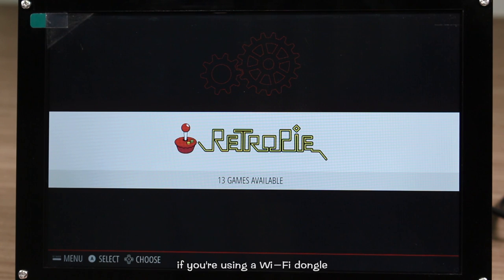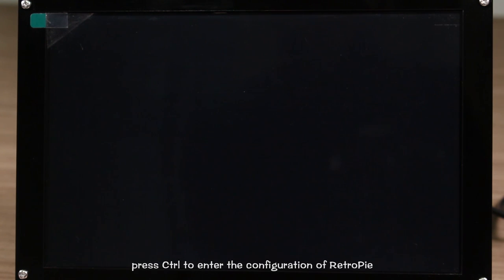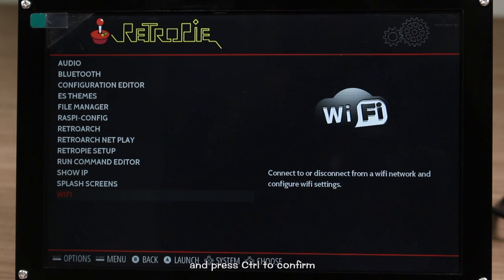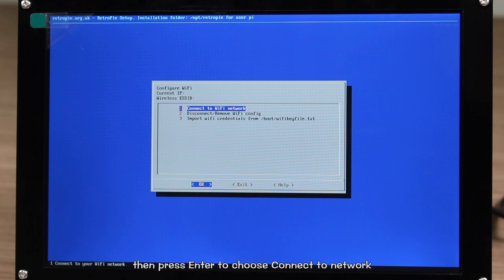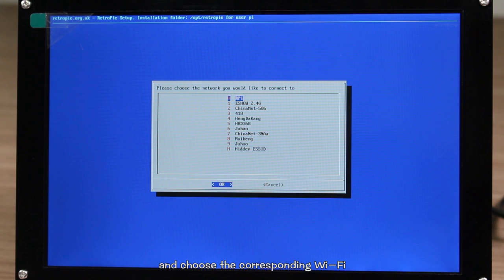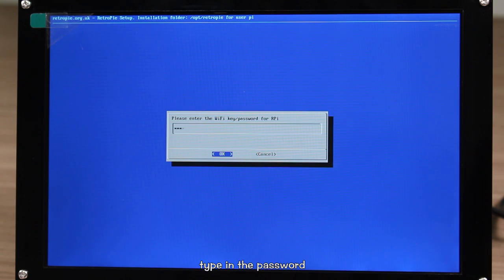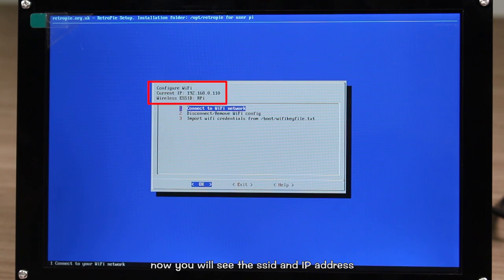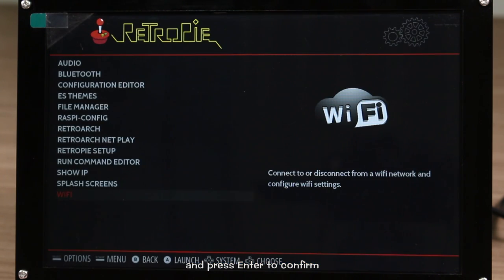However, if you are using the WiFi dongle, you also need to configure the WiFi. Press Ctrl to enter the configuration of RetroPie. Select WiFi and press Ctrl to confirm. Then press Enter to choose connect to network and choose the corresponding WiFi. Type in the password. Now you will see the SSID and IP address of the connected WiFi on the top left corner. It indicates the connection is completed. Use the direction keys to select exit and press Enter to confirm.